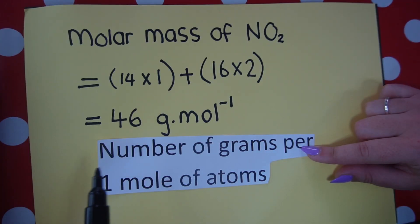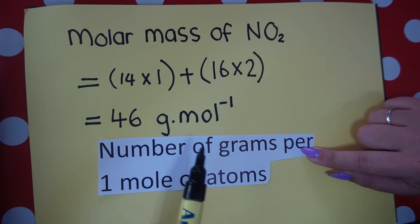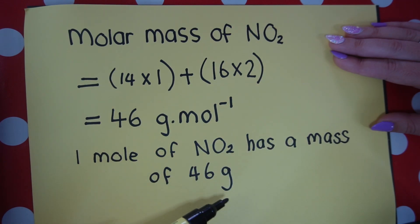It's very important to understand what the molar mass means. Remember the unit is grams per mole. And that tells us that one mole—for example, one mole of nitrogen dioxide—has a mass of 46 grams. Molar mass is a very important quantity to be able to calculate because it is something that helps us go from grams, so mass, to number of moles. And this is very important in chemistry.